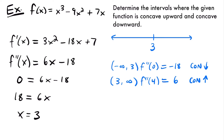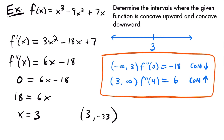As a result, that means that x equals 3 is an inflection point for this function because the concavity changes at that point. If you were to plug this value of 3 into your function, you would have the coordinate point 3, negative 33, and that would be your inflection point. But to answer our main question, we found the intervals where our function is concave up and concave down. Let's look at another example.